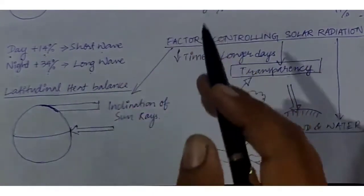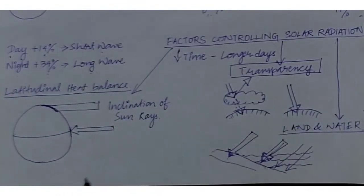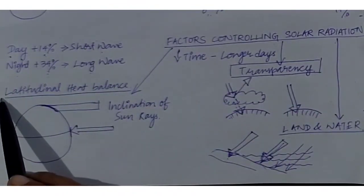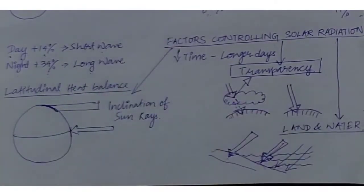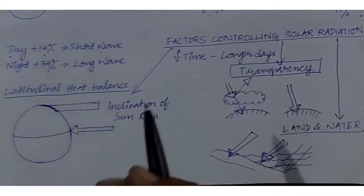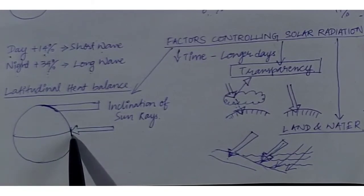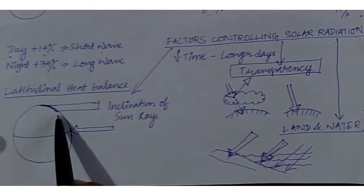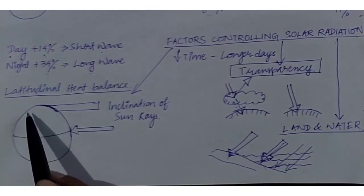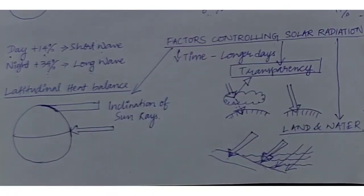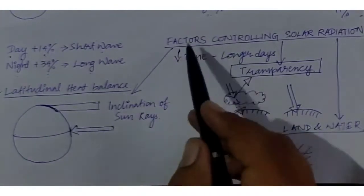The heat budget we have learned represents the average for the whole Earth. However, the heat balance differs at different latitudes because the amount of solar radiation received varies. For example, the equator receives direct rays from the sun so the temperature is higher, while polar areas receive inclined or indirect sun rays, making the heat balance different. As we move toward the polar areas, the heat balance differs — this is called the latitudinal heat balance.